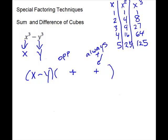So first root times itself: x times x gives us x squared. First root times the second one: x times y will give us xy. Last one times itself: y times y will give us y squared. And it's finished. This trinomial, even though we have something to the second power, we don't have to worry about it factoring more. It is not going to factor more when it comes out of a cube.